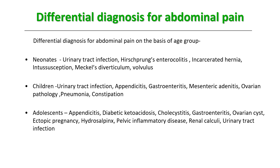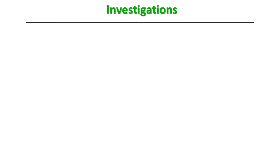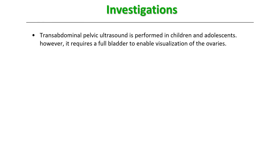Teenage girls can even present with ectopic pregnancy, so take a history of any missed cycles or missed periods. If sexually active, they can present with hydrosalpinx or pelvic inflammatory disease. Renal calculi and UTI should also be considered. Keep these differential diagnoses in mind and correlate with other symptoms — the importance of good history taking cannot be replaced.